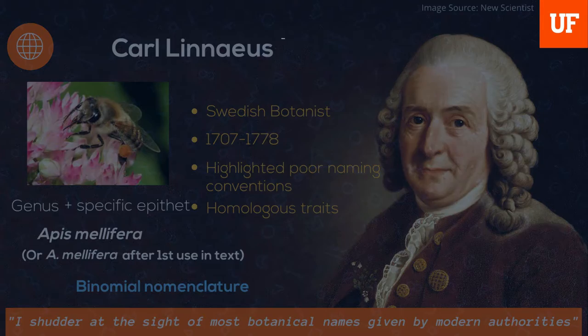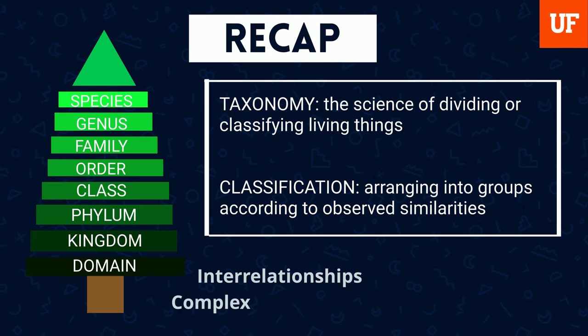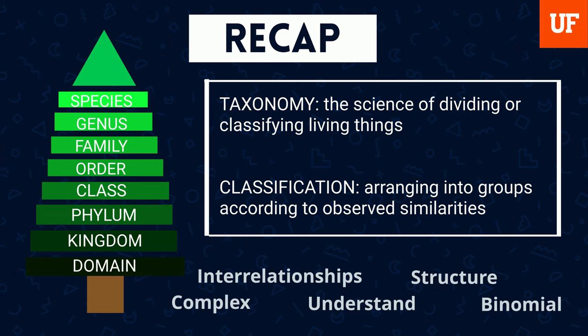Let's recap. Taxonomy is the science of dividing or classifying living things, and classification is arranging those things into groups according to observed similarities. As humans, we do this because the world is complex, there are many interrelationships, and humanity has the innate desire to understand and organise what we see around us by structuring it. In this case, a binomial nomenclature is used to define each species.